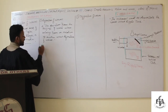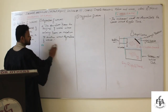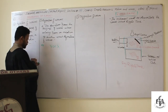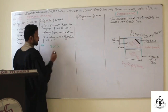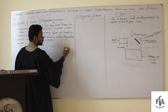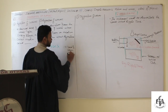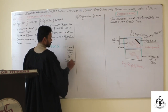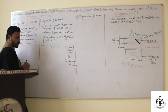Remember that when waves enter from one medium to another medium, what happens is that the speed changes. When the speed of the wave changes, automatically the wavelength — lambda — will also change.